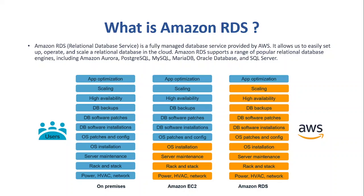EC2 removes some IT overhead, but not all of them — only the OS-related IT overhead. Anything related to databases we still need to do ourselves: backups, patching, installations, scaling, and all these still need to be done by users. But if we use Amazon RDS, everything is taken care of by AWS, and we only focus on application tasks such as schema design, query construction, and optimization.